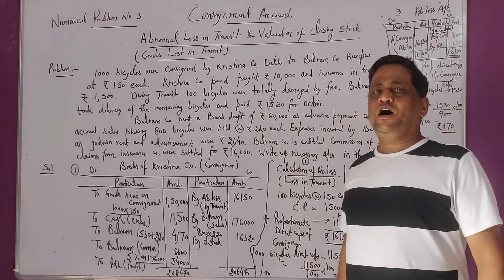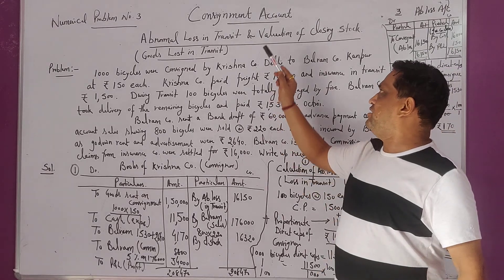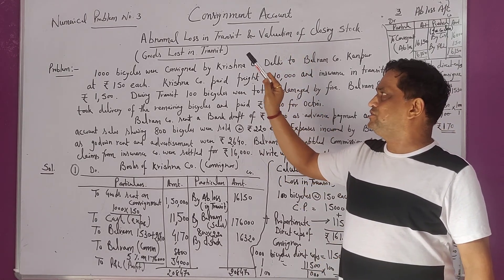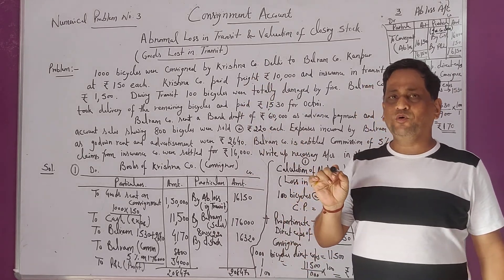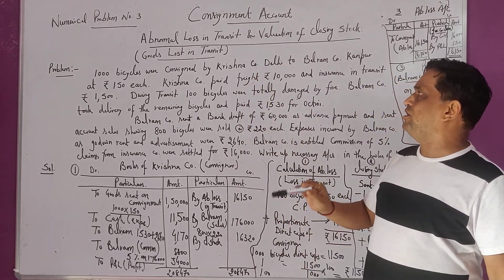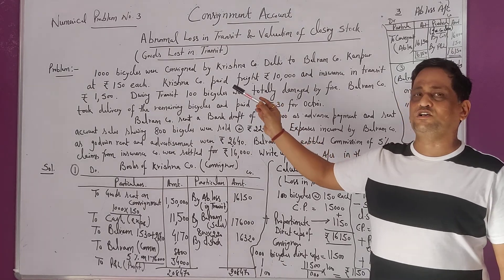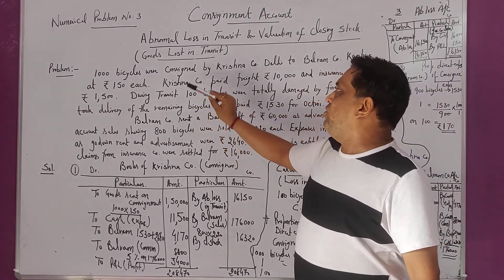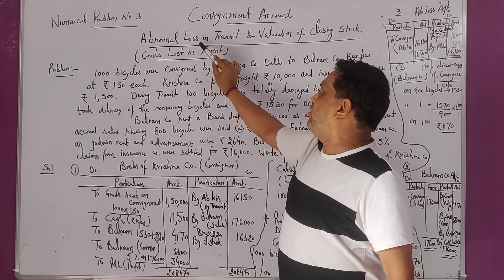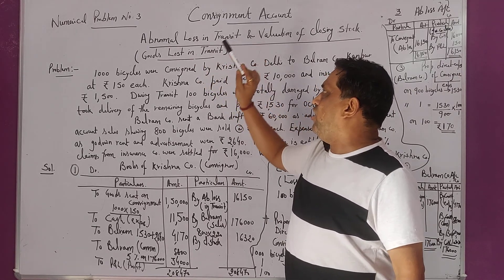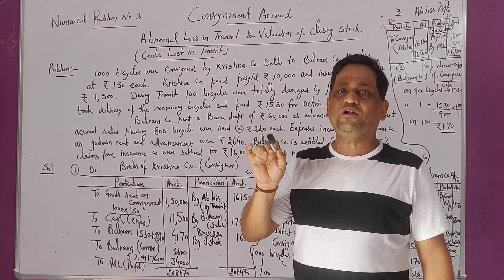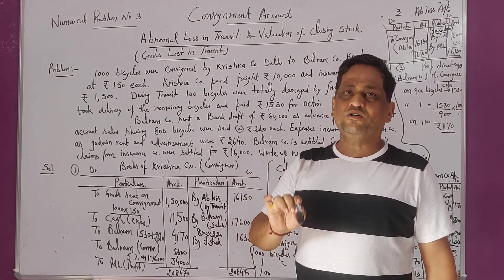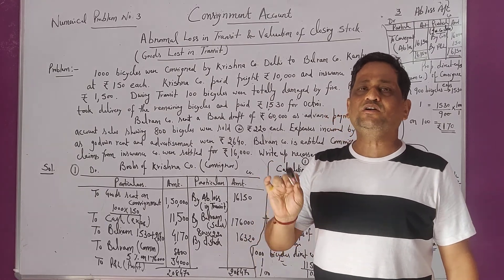Hello dear friends, I welcome you again in consignment account. Today we are about numerical problem number 3, which will be the most important problem because it will create two versions of the calculation. This is about abnormal loss in transit — how we calculate when goods are lost by fire and goods are lost by theft during transit.